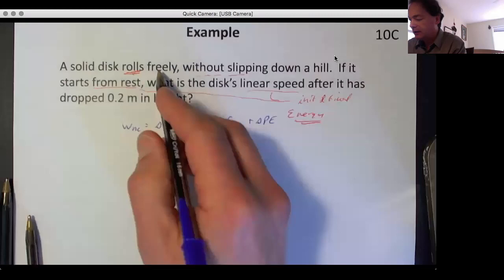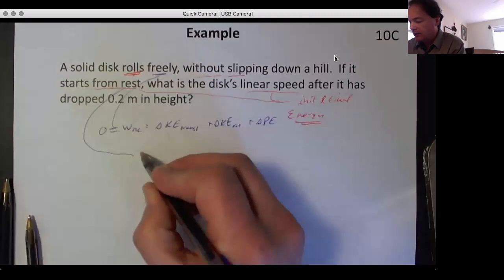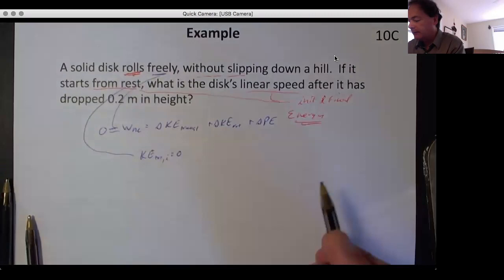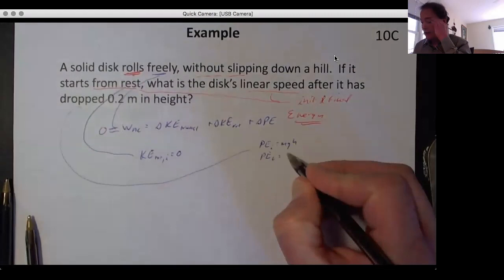'From rest' means that KE total initial is equal to zero. And after it is dropped, we'll take PE initial is mgh, PE final is zero. So if we put all those together we end up with...